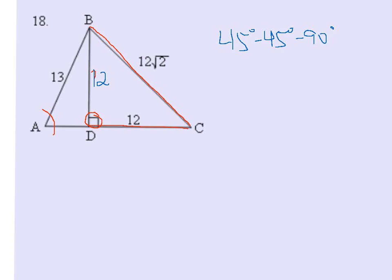So now that we know BD is 12, I can set up to solve for angle A. I have the opposite leg which is 12 and the hypotenuse which is 13. So that's going to be sine. Sine of A equals 12 over 13. If I go to my calculator and enter inverse sine of 12 divided by 13, I will find that the measure of angle A is 67.4 degrees.